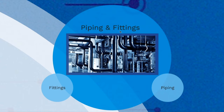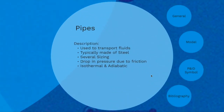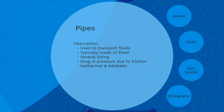We are in the piping and filling section, so let's cover piping. What's the overall description? Well, they are used to transport fluids. You cannot do it alone — you require some fixed material that moves the fluids. Typically they will be done by steel, but we're going to cover more materials. They have several sizing, and importantly they will have a drop in pressure, so we need pumps in order to counterbalance this drop in pressure.